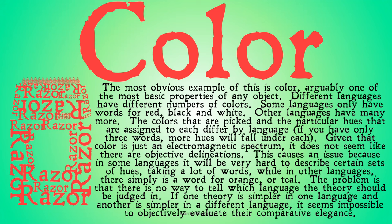Given that color is just an electromagnetic spectrum, it doesn't seem like there are any objective delineations between the correct kinds for color. But color is a word we use — and colors are words we use importantly to describe complicated chemical reactions that we see. Something changing color has important meaning to us; it's a term we use to describe or lump objects together. We lump objects by color: these particular rocks are emeralds because they are one color, and rubies because they are a different color. This causes an issue because in some languages it would be very hard to describe certain sets of hues, taking a lot of words, while in other languages there simply is a word for orange or for teal. The problem is that there's no way to tell which language the theory should be judged in.